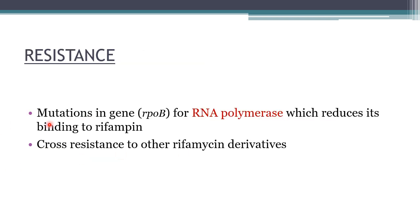Resistance to rifampin develops due to mutation in the rpoB gene, which encodes RNA polymerase, reducing its binding to rifampin. There is cross-resistance to other rifamycin derivatives like rifabutin and rifapentin, but no cross-resistance to any other antimicrobial drug. The resistance mechanism is mutations in genes encoding for RNA polymerase — memorize the gene name rpoB if you can, but don't write a wrong name.